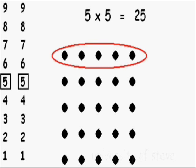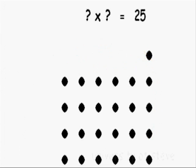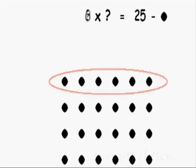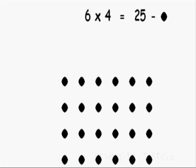If we take this row and put it over here, we have the same number of dots, but its dimensions are kind of funky. But if we take 1 away, we see its dimensions are easy. 6 times 4 is 1 less than 5 times 5 was.